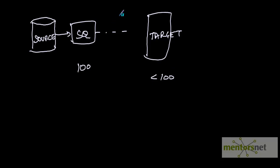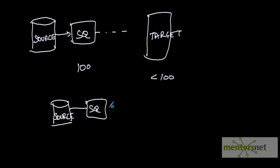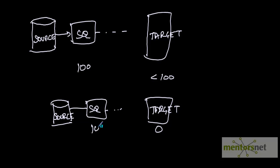Sometimes you may want to — because source and target is mandatory in Informatica — not send any record to the target at all. You simply want to totally restrict the flow; there could be some scenarios where you want to send 0 records to the target. For these two scenarios, filter transformation would help.